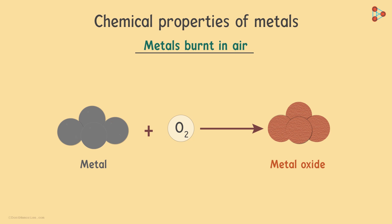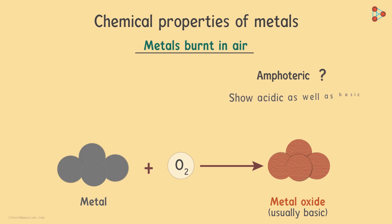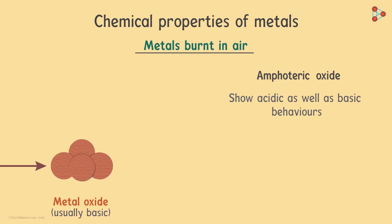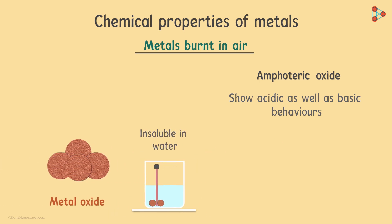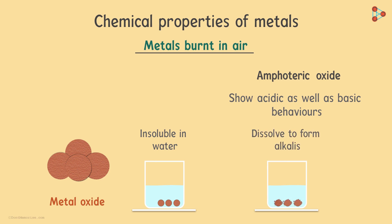These metal oxides that are formed are usually basic, but they can also be amphoteric. Metal oxides which may show acidic as well as basic behaviours are known as amphoteric oxides. Most metal oxides are insoluble in water, but some may also dissolve to form alkalis.